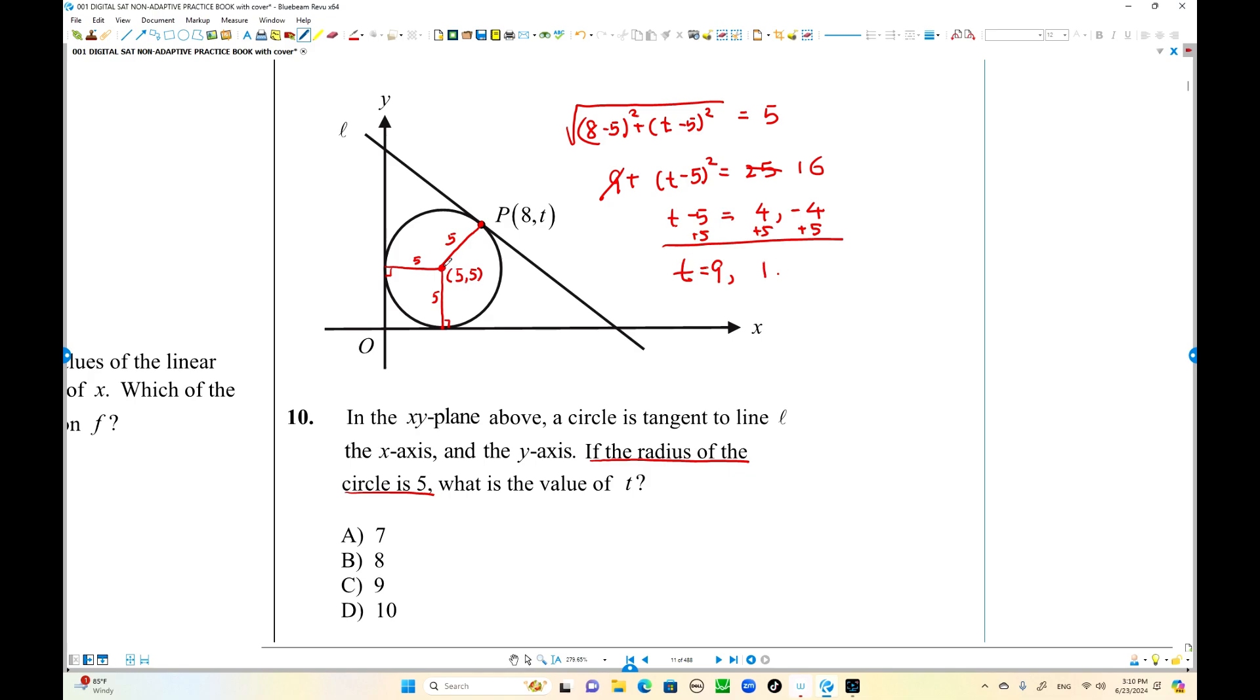So t equals 9 or 1. t is up there, right? Above this number 5, it can be 1 over there. So the answer is 9. Okay? Choice B is the answer. Or you can use graphical method. I'm going to use this one. Graphical method, it's the same thing, right? Using Pythagorean theorem.